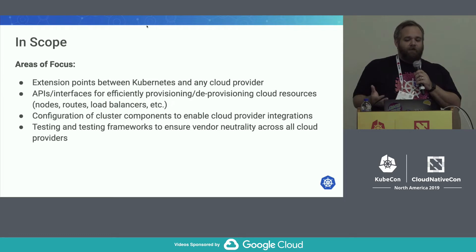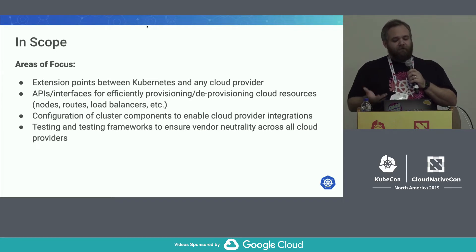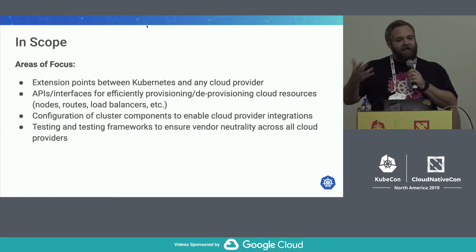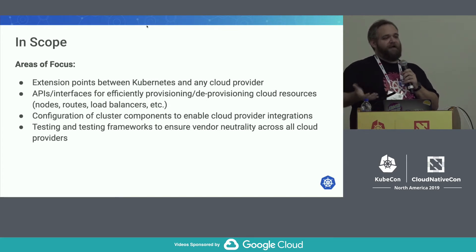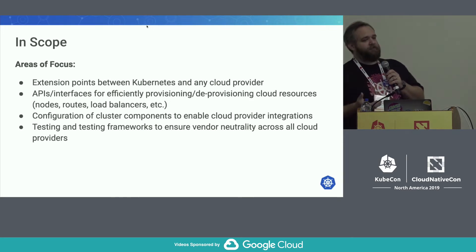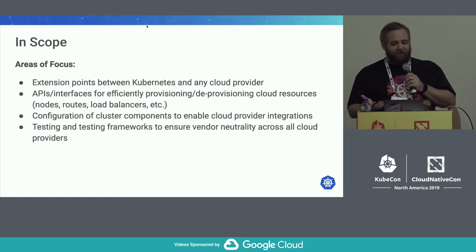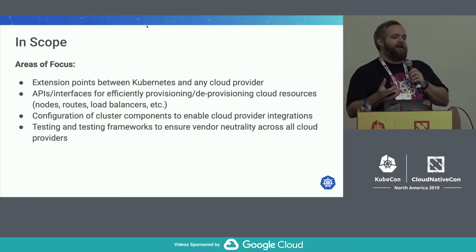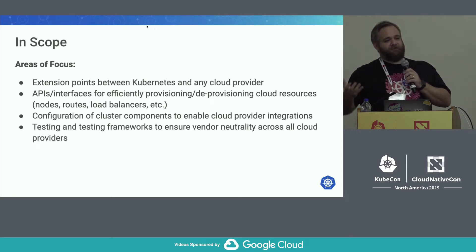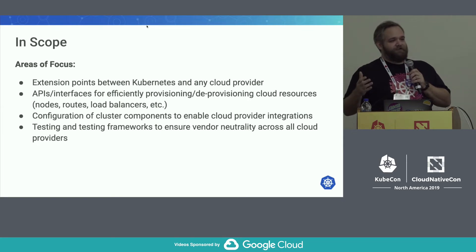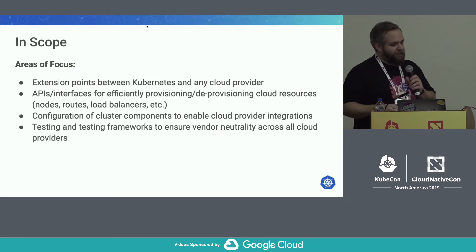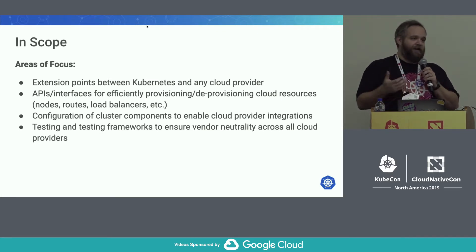Ideally, what we want to do is leverage cloud-specific components and services with Kubernetes. If your cloud platform has services that can be beneficial to Kubernetes, we want to make sure you have all the integration points and all the APIs you need to use them effectively. We want to make sure you have all the right abstractions and APIs to do lifecycle management of those resources — think of it as a way to provision load balancers or use encryption keys from your cloud provider.